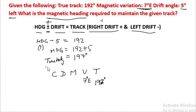We know CDMVT east we add in this direction. That means 197 minus 7 degrees will give us 190, which will be the magnetic heading.